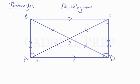And that's because the diagonals are actually congruent. This whole diagonal AC is congruent to diagonal BD.